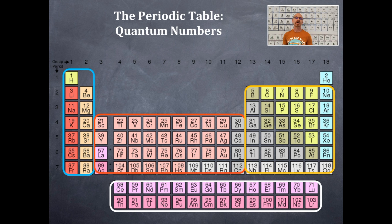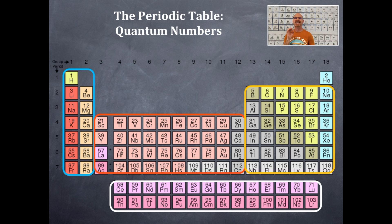Today we're going to be talking about the quantum numbers associated with the locations on the periodic table — just like buying a house: location, location, location. In the blue section are S-type orbitals. In the orange section are P-type orbitals. In the red section are D-type orbitals. And in the white section are the F-type orbitals. Now we're going to associate quantum numbers with these locations as well.